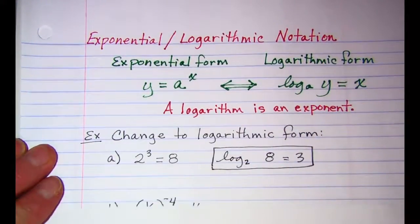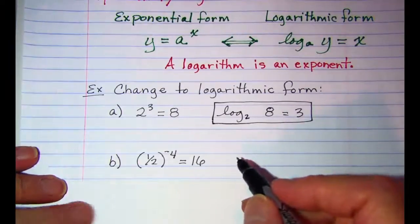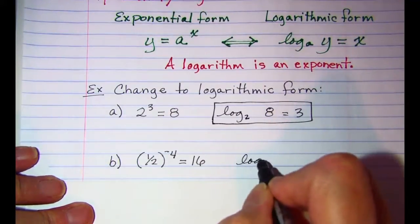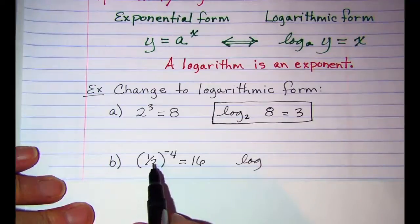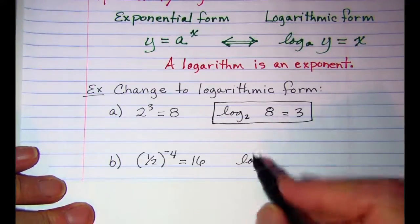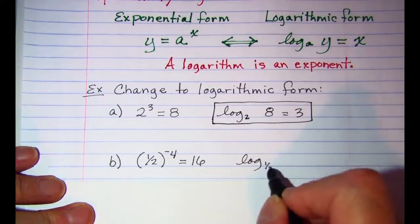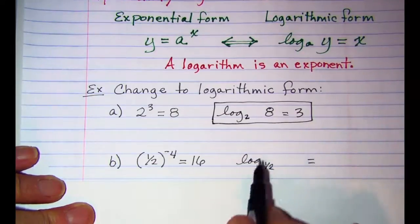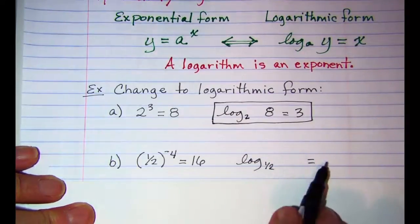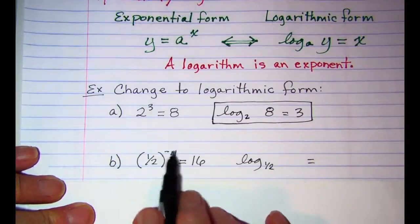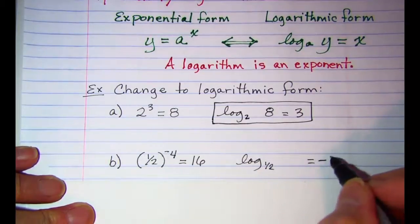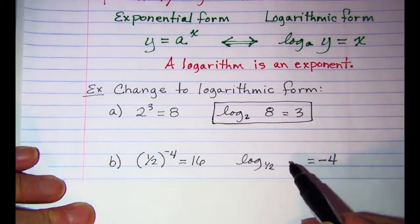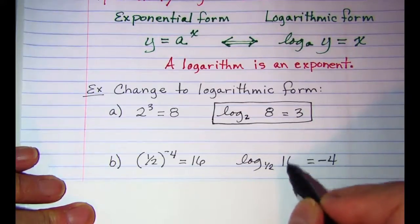Another example. We want to write this in logarithmic form. The base of our exponential is one-half, so the base of our logarithm is also one-half. We know that our log is the exponent, so we have negative 4 on this side. And then 16 will be our argument.